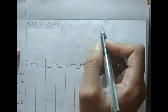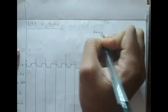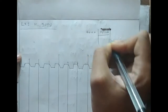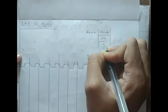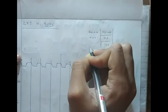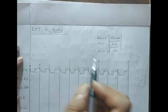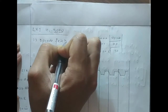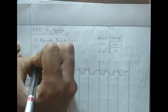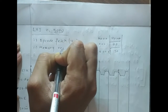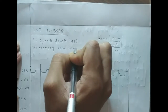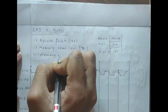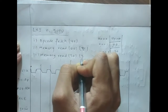Suppose LXI B, 3000H is stored in memory location 0000. The first byte consists of the opcode, the second byte stores the lower order address 00, and the third byte stores 30 (higher order). This is a three-byte instruction consisting of three machine cycles: first, opcode fetch of 4T states; second, memory read of 3T states; and third, memory read of the higher order byte, also 3T states.